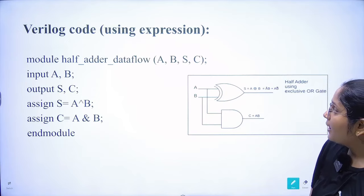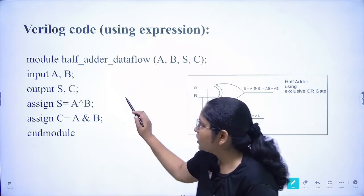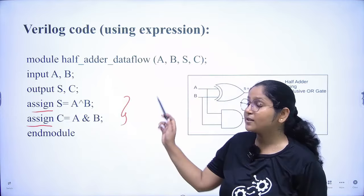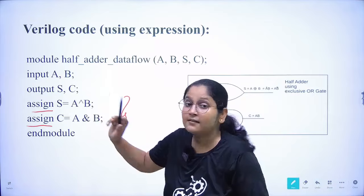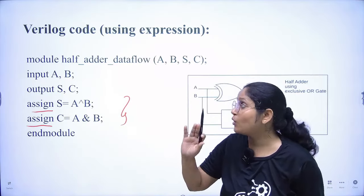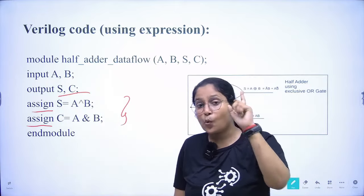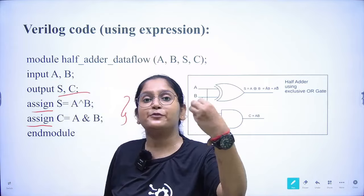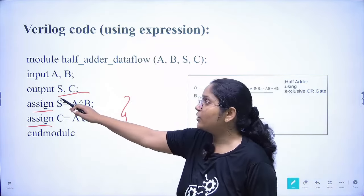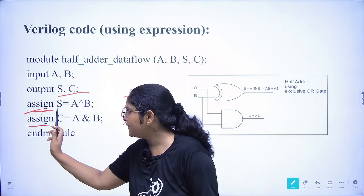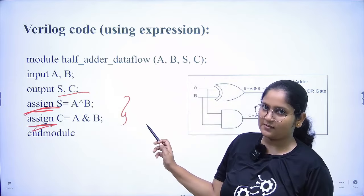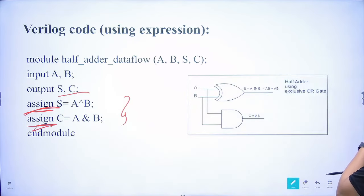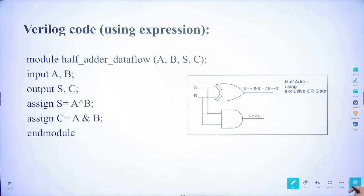Comparing data flow to behavioral modeling: we use the 'assign' keyword and the 'always @' is removed. In data flow modeling we do not declare the output as a reg — that only happens inside always blocks in behavioral modeling. Here we want LHS to be net type and we simply assign values for sum and carry through boolean expressions.